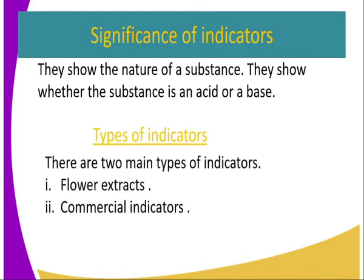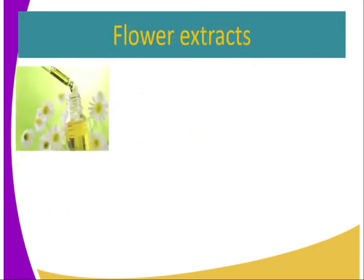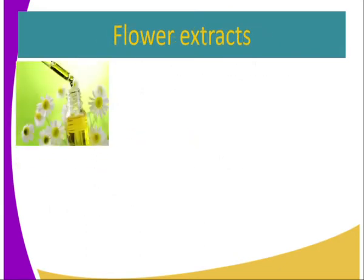So, how many types of indicators do we have? There are two: flower extracts and commercial indicators. As for flower extracts, how can we get them?